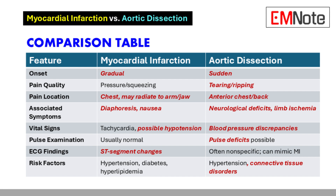In contrast, aortic dissection presents with sudden onset and tearing pain. Pain may be located in the anterior chest or back. Associated symptoms include neurological deficits and limb ischemia. Blood pressure discrepancies greater than 20 mmHg between the arms and pulse deficits are notable findings. Electrocardiogram findings are often nonspecific and can mimic myocardial infarction. Risk factors include hypertension and connective tissue disorders.